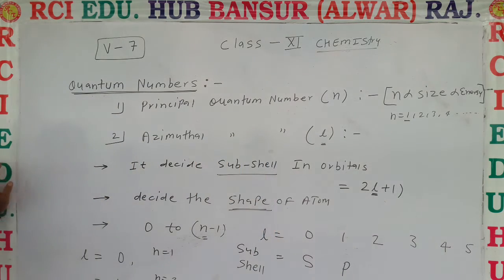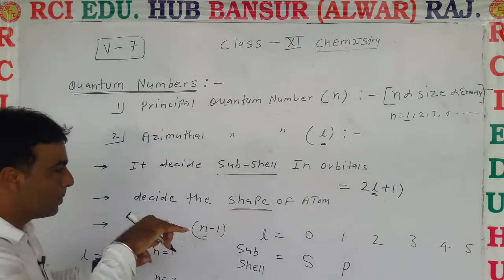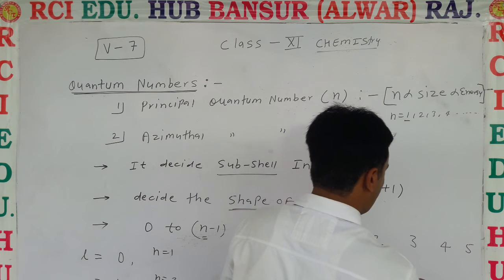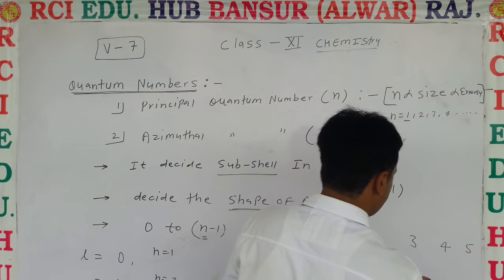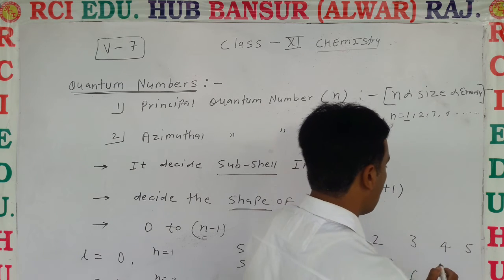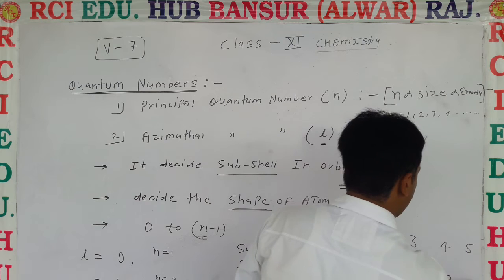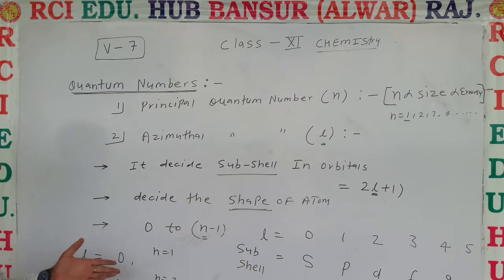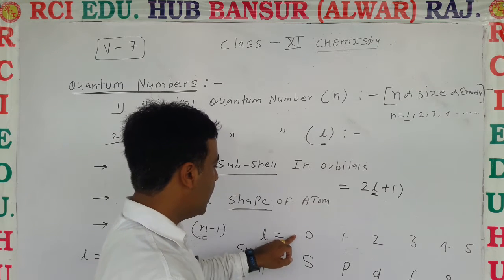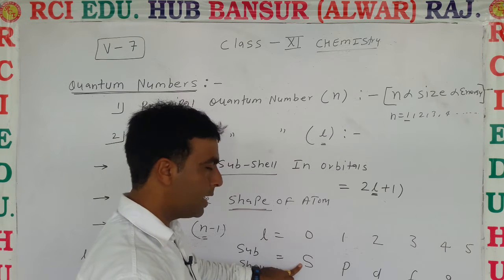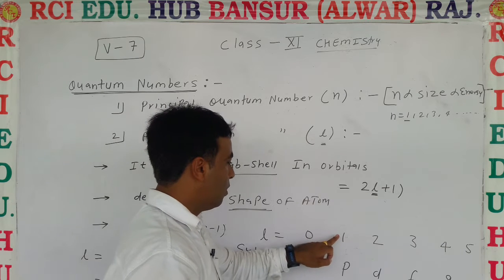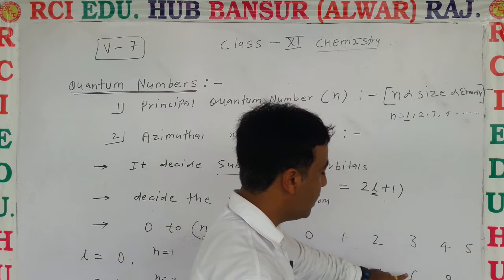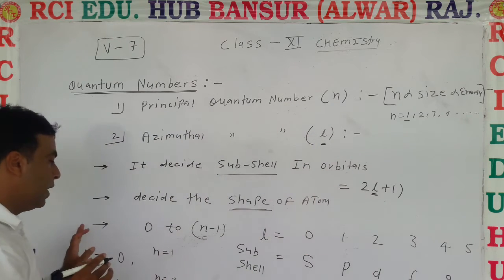If l = 1, that is p. If l = 2, that is d. If l = 3, that is f. If l = 4, that is g, and it continues. The ones most useful for us are: l = 0 gives the s orbital, l = 1 gives the p orbital, l = 2 gives the d orbital, and l = 3 gives the f orbital.